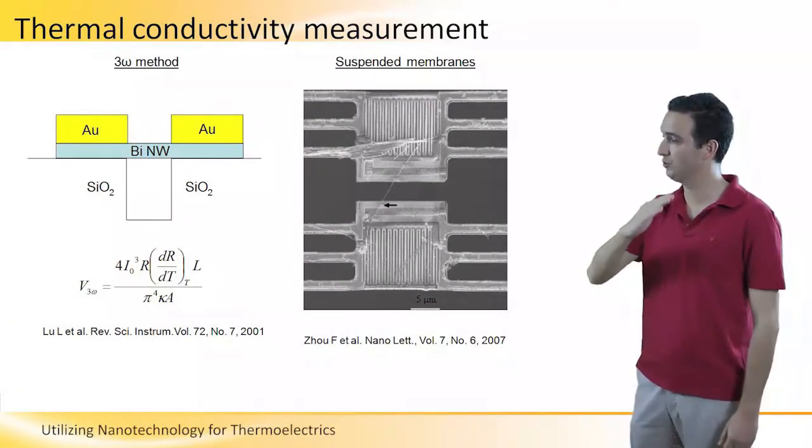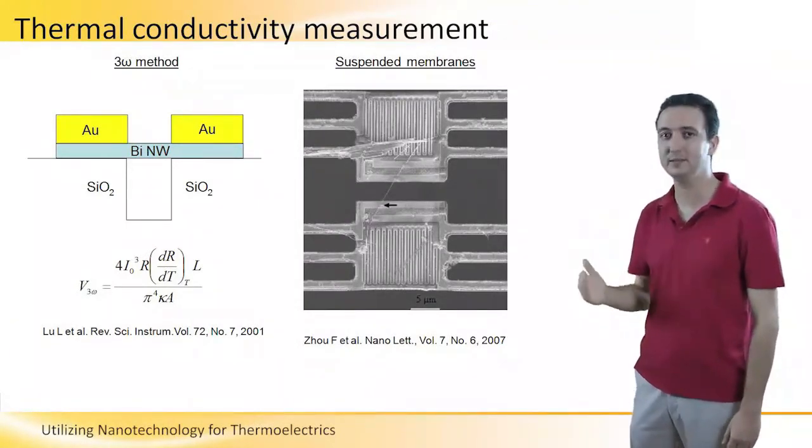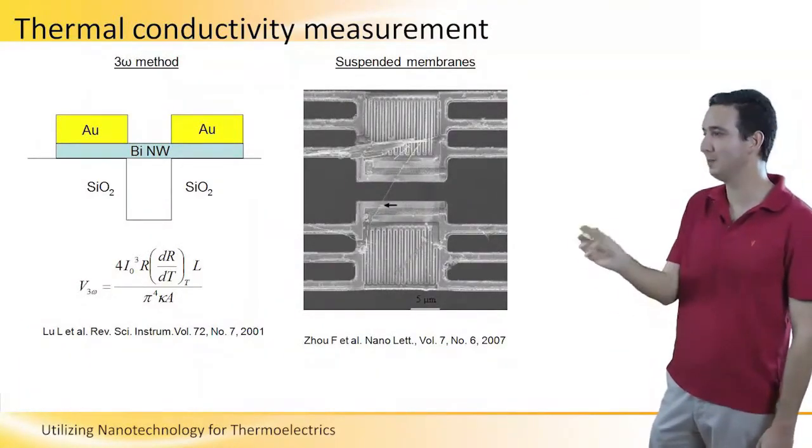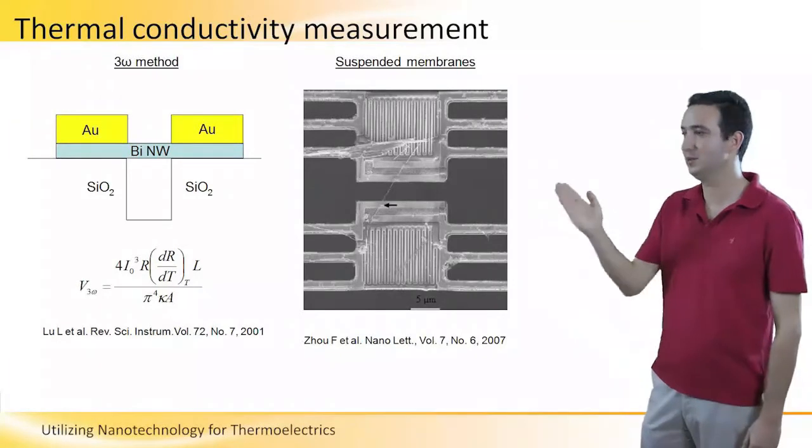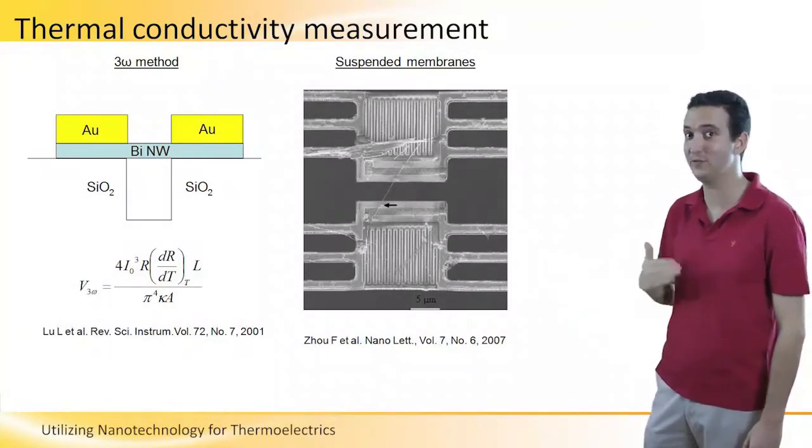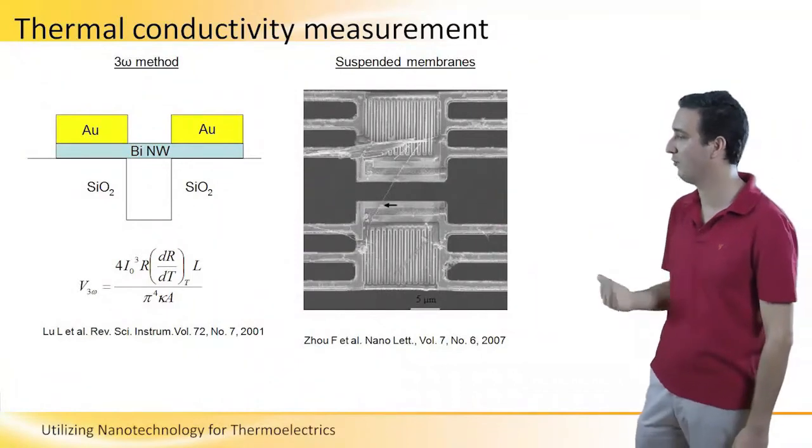So, we now have a current which fluctuates at 1 Omega and resistance which fluctuates at 2 Omega. And now, if you multiply the current by the resistance, you get a voltage. But this voltage is at a frequency of 3 Omega.